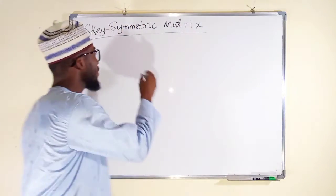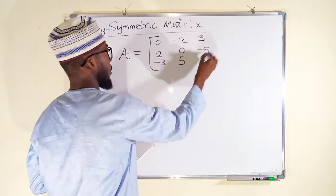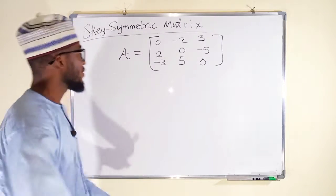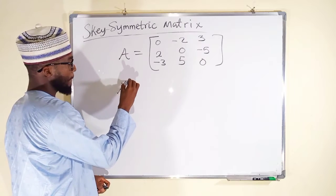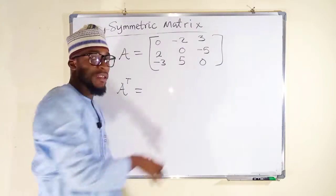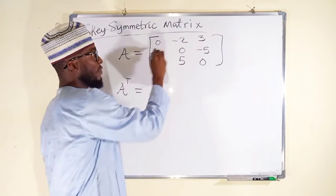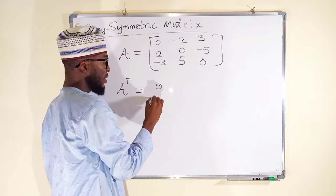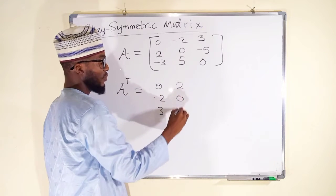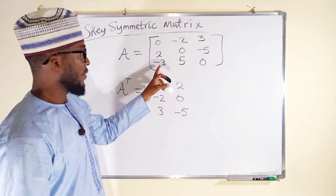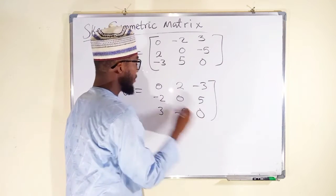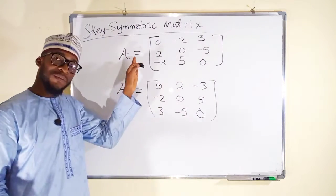Suppose we have matrix A. First, let us find the transpose. A-transpose: take the first row and interchange it as the first column — we have 0, negative 2, and 3. The second row becomes the second column — 2, 0, and negative 5. The last row becomes the third column — negative 3, 5, and 0. This is the transpose of matrix A.